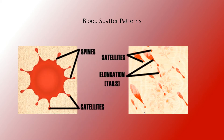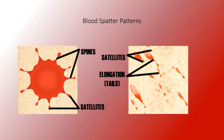I said I would explain what spines and satellites are. Spines are anywhere you have an extension of the body of the blood droplet that is still connected to that body. Then as you extend out further, where it looks like it's forming another smaller version of a droplet — that's where it changes from being a spine to a satellite.